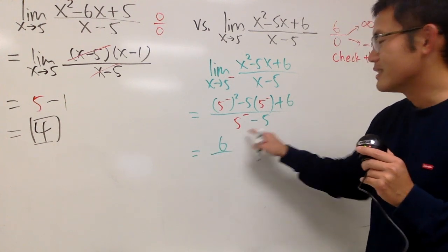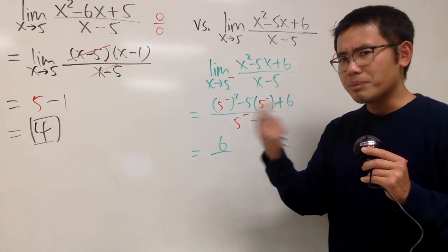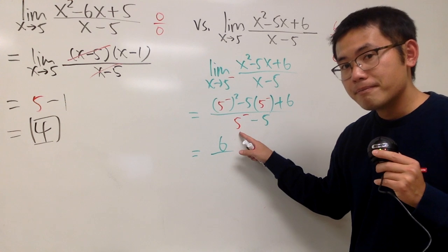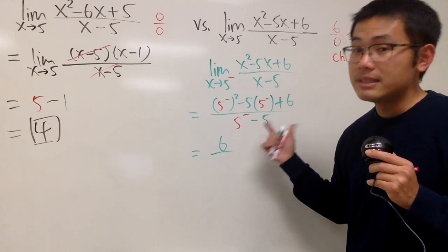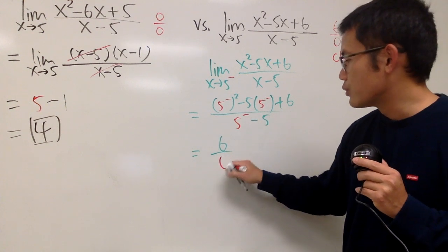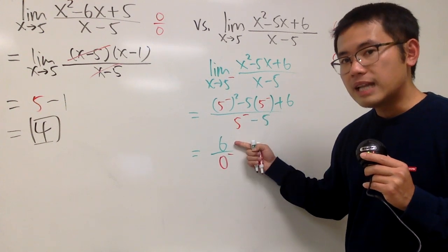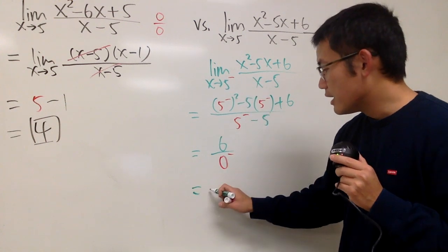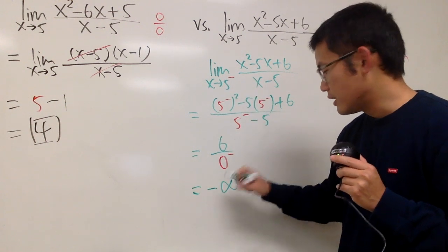However, the bottom, this is where you have to check the sign of the 0 plus or the 0 minus. This is like 4.999 and then minus 5. It's going to be a negative small number. So we will write this as 0 minus. On the top, it's positive. On the bottom, it's negative. Therefore, this limit gives us negative infinity.